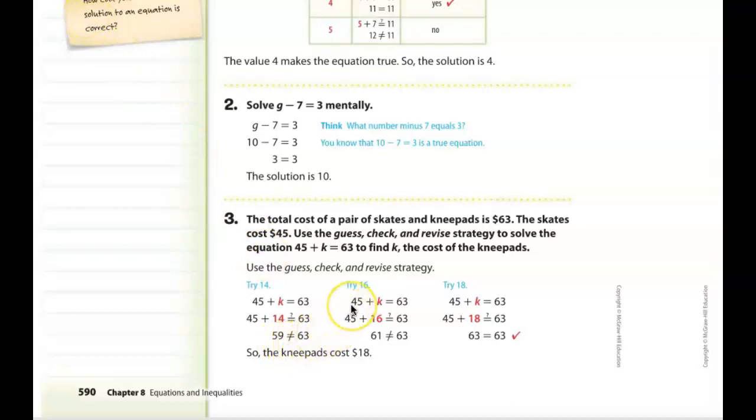59 does not equal 63. So it must be something larger. So they tried 16, and said 45 plus 16, and they end up getting 61. That does not equal 63. So now they've tried 18, and 45 plus 18 does equal 63. So this is the answer.